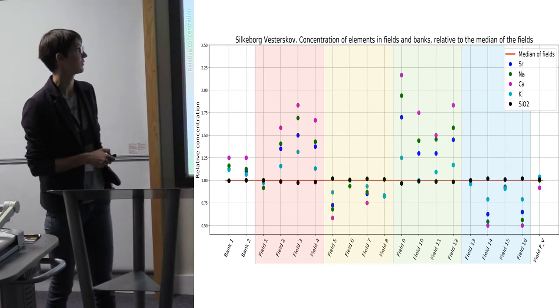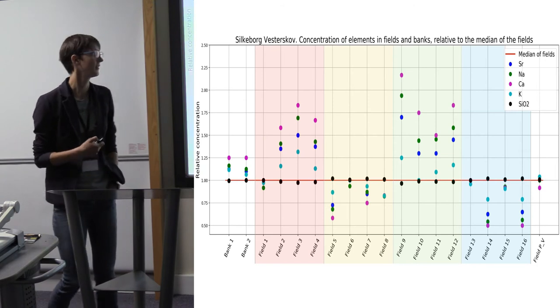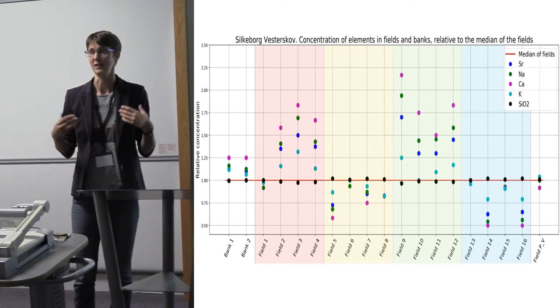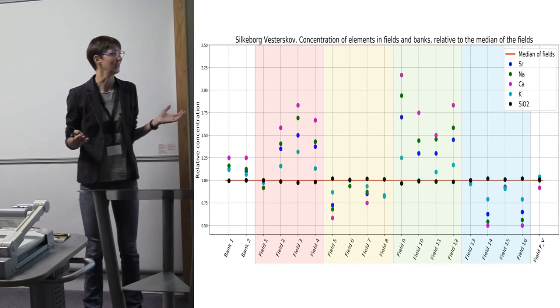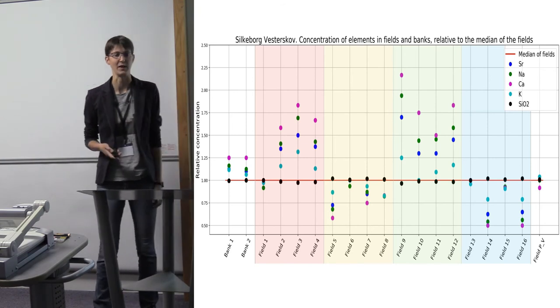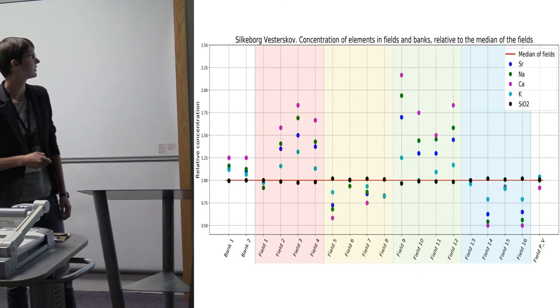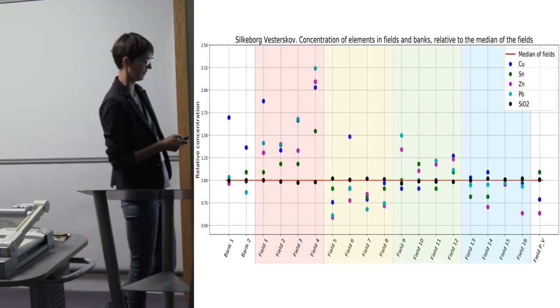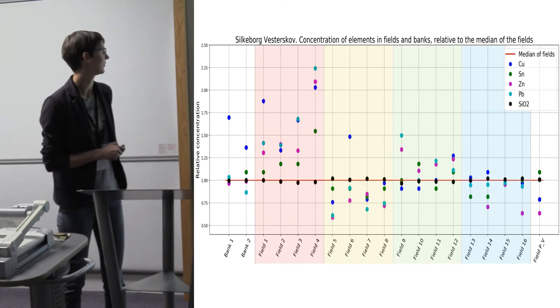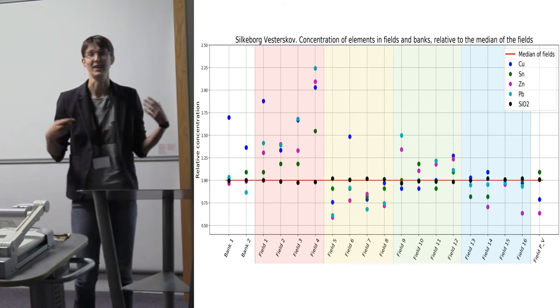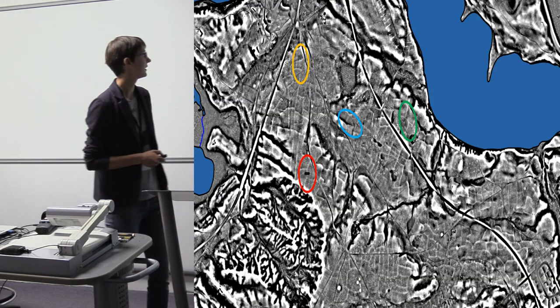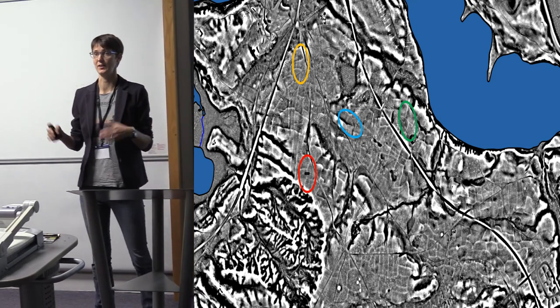We did XRF and looked at the silicon content, which seems very stable. So the differences we see in element concentrations cannot be explained by different contents of silica. It's not that there's more quartz sand in some samples. When looking at other elements that might be indicative of human activity, again we see the red and green ones are most enhanced in these elements. Clearly we can see differences among different groups of fields within the field system.